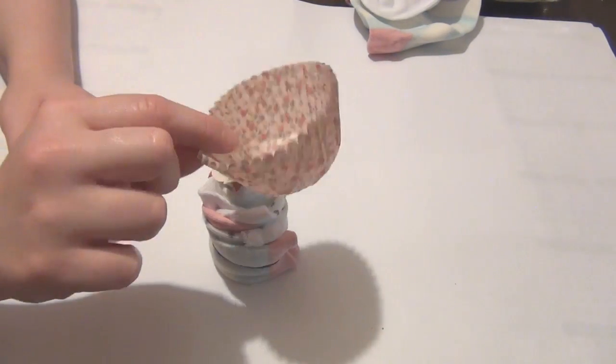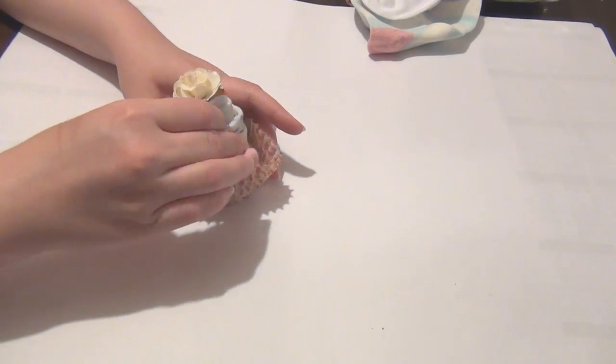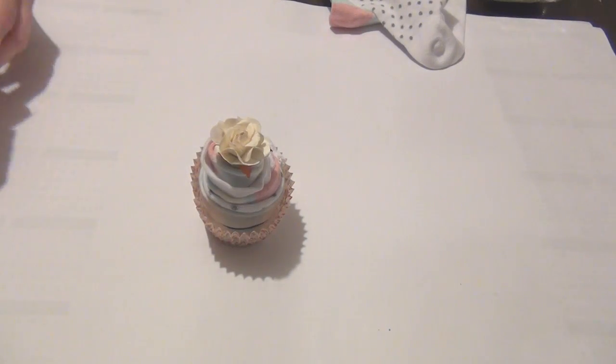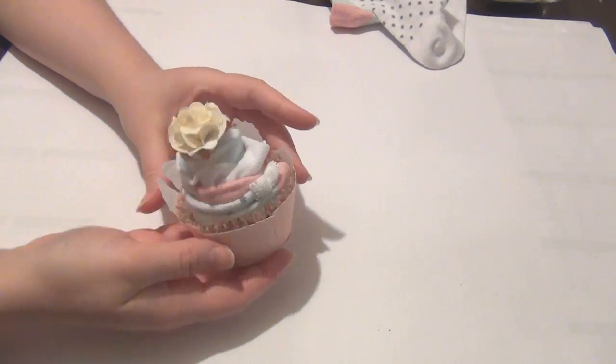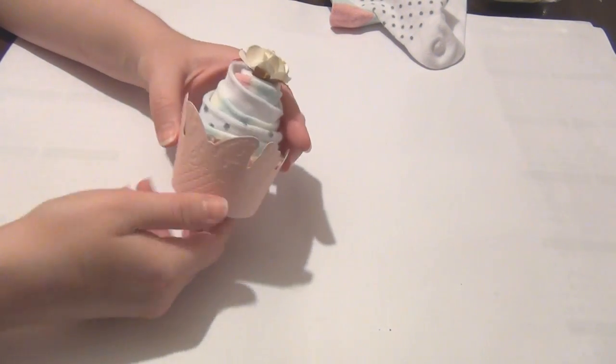Then take your cupcake liner and place that inside. And you can use some double-sided tape if you feel like you need to and that will just stay in place. I ended up placing that whole thing inside a cupcake wrapper.